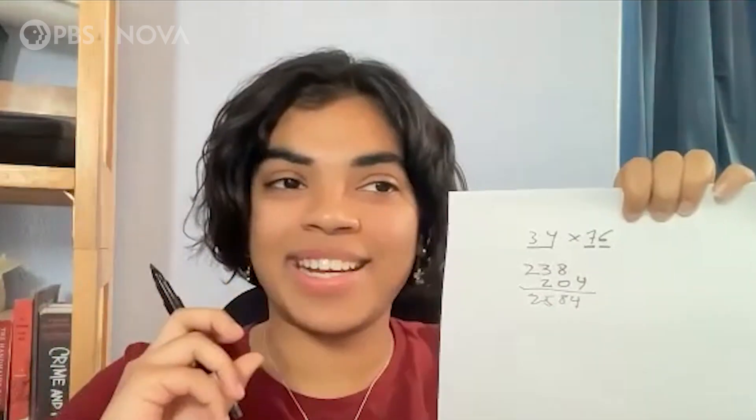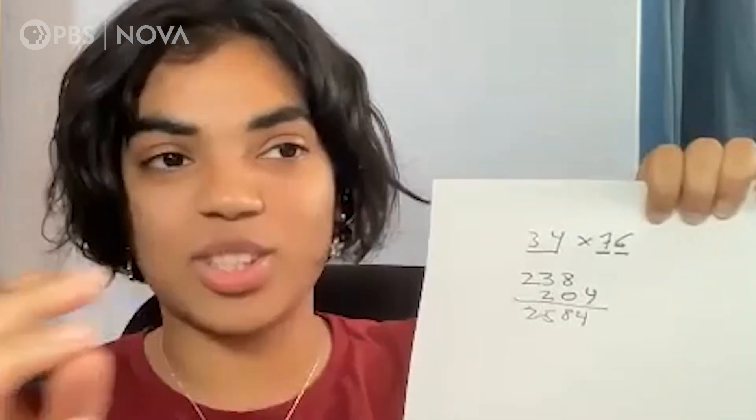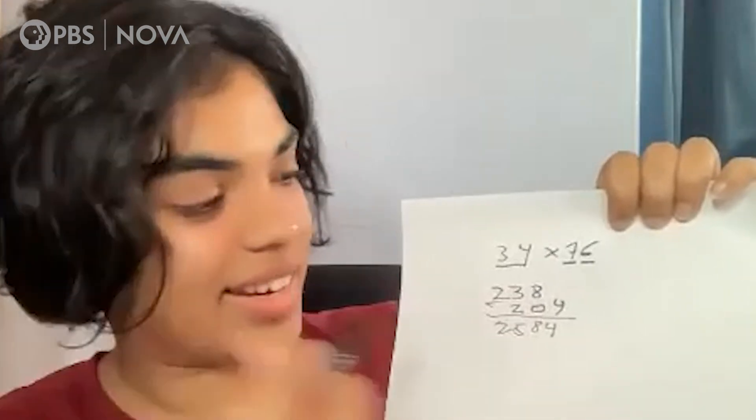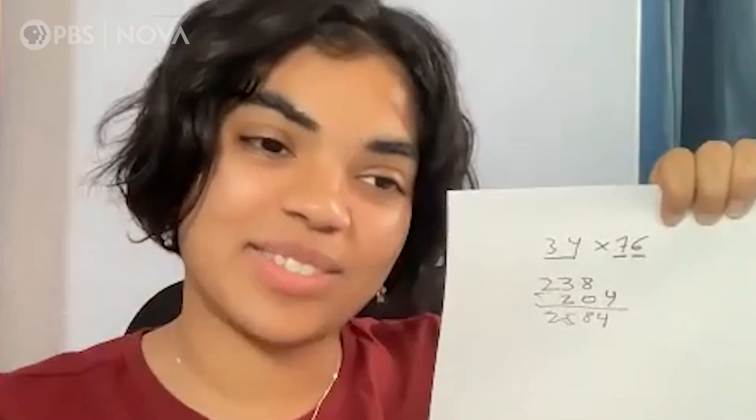But a nice trade secret, as you're calculating it, you can start saying the answer. Because you know it starts with a 2. And then as you're adding, you're like, OK, the next one is 5. The next one is 8.